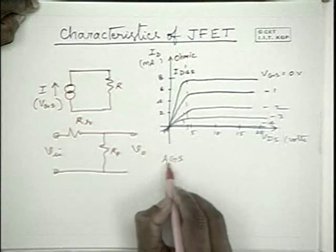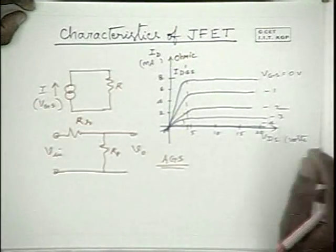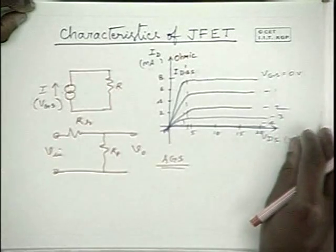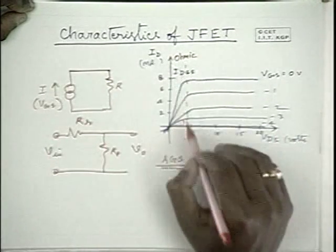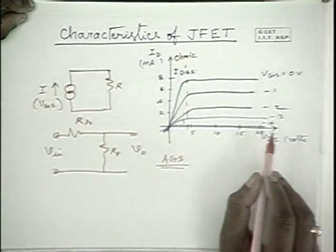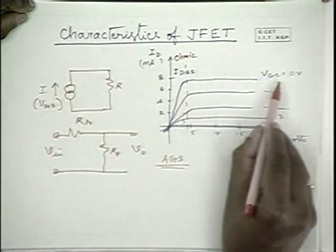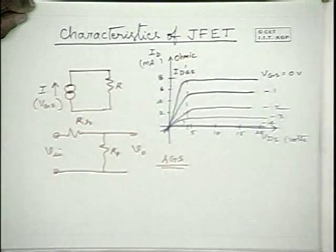This is what is typically used in receivers, receiving sets to provide wide dynamic range for the receiving set to be able to work with different levels of input signal strength. So, this is about the output characteristics which is between the drain to source voltage and the drain current. When VGS is equal to 0, IDSS is the current.